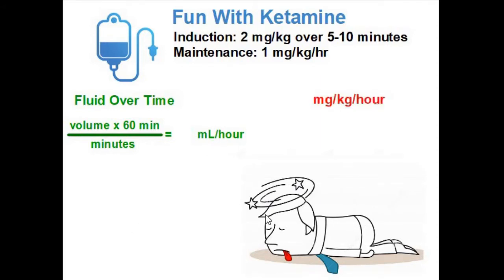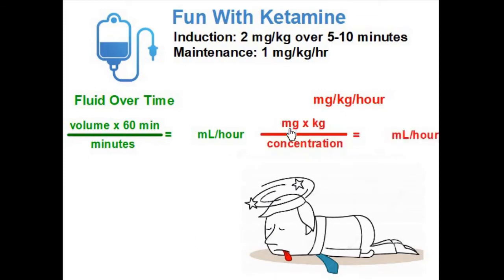The maintenance dose is a mg per kg per hour calculation, which is the number of milligrams you're going to administer times the kilograms. Remember, this is already in hours, so we don't have to multiply by 60 to convert to hours, and then you divide by the concentration.